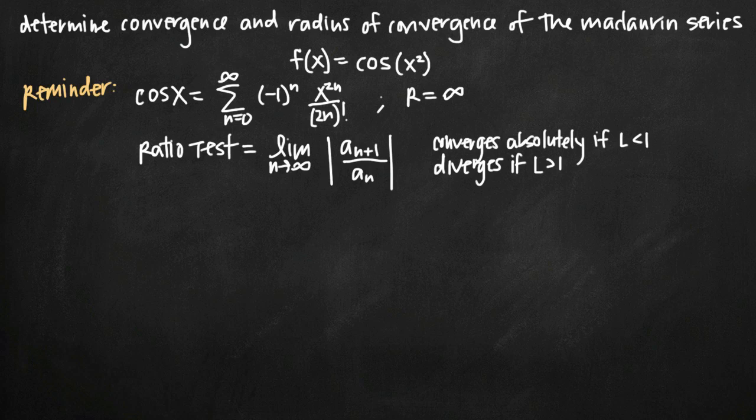Today we're going to be talking about how to determine the radius of convergence of a Maclaurin series. In this particular problem, we've been given the function f(x) = cos(x²).